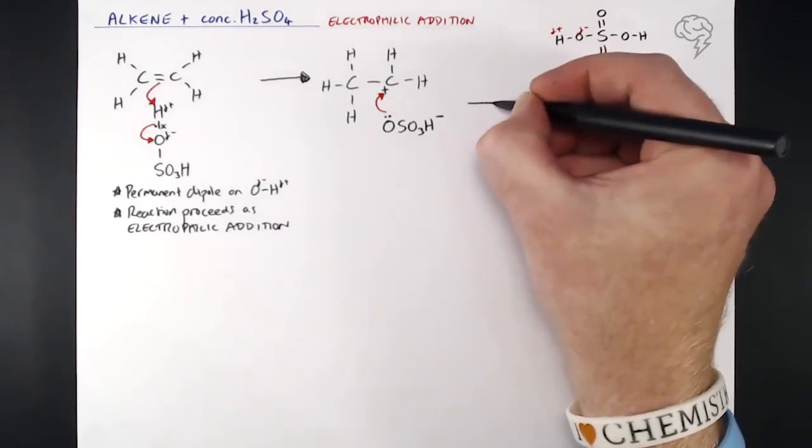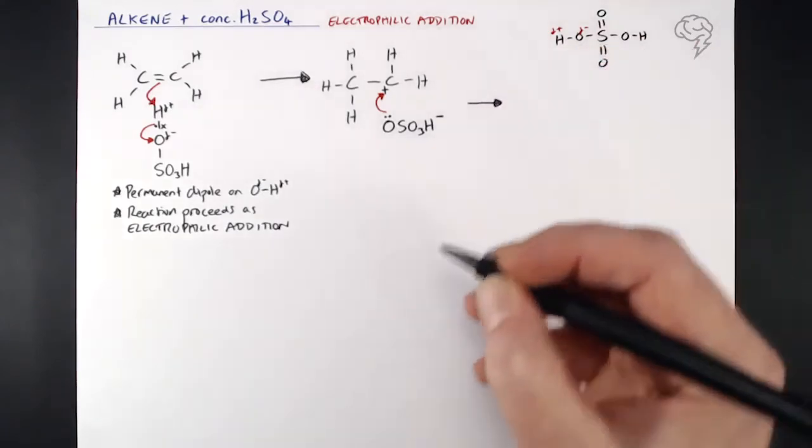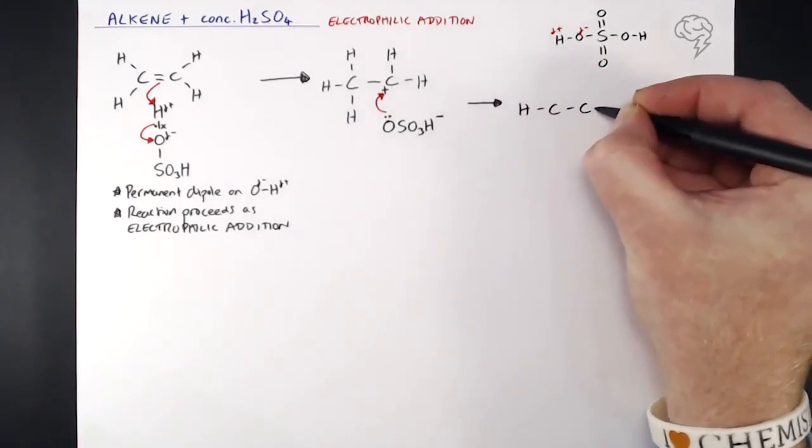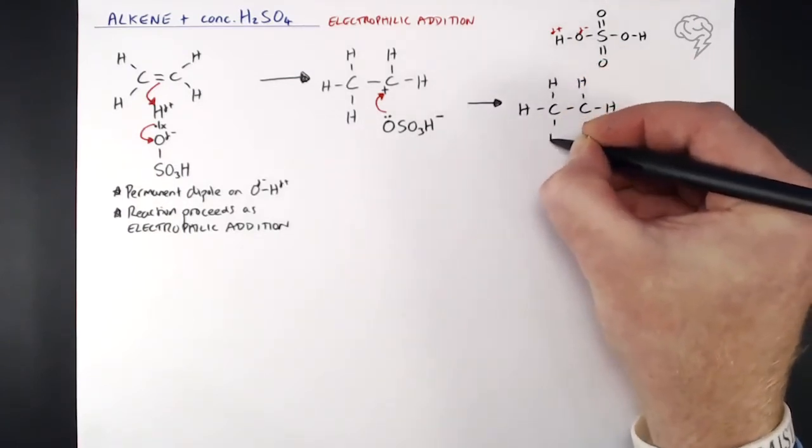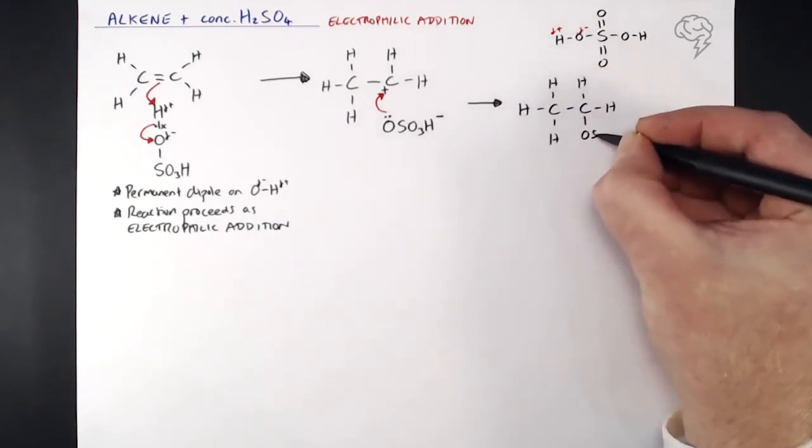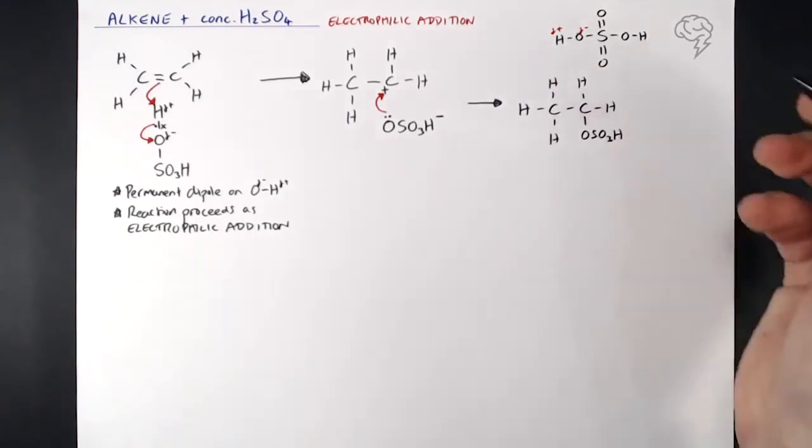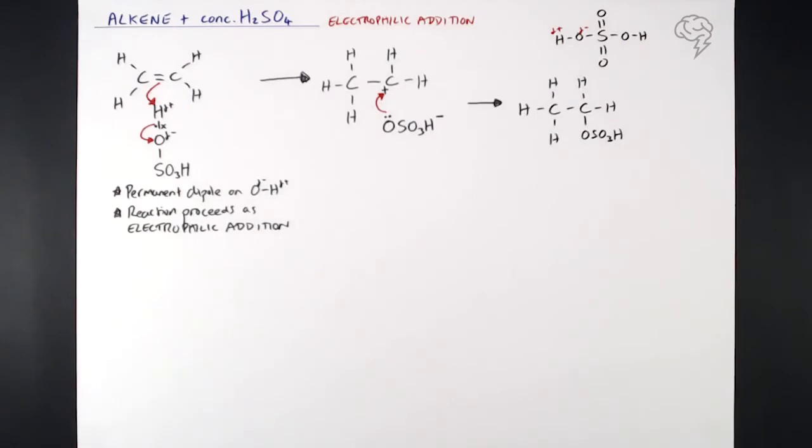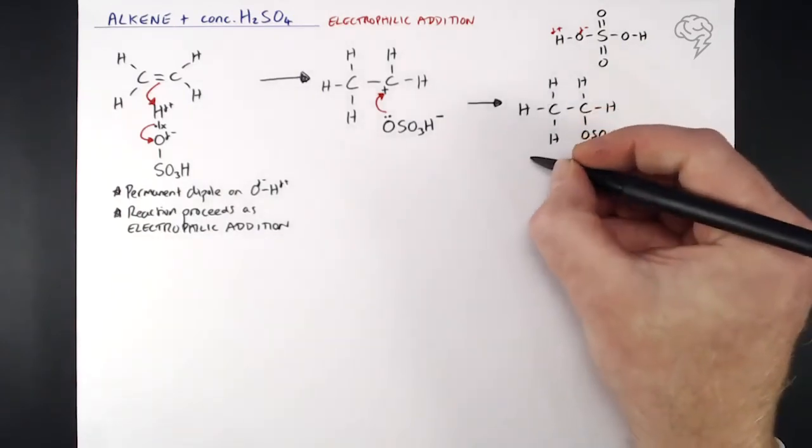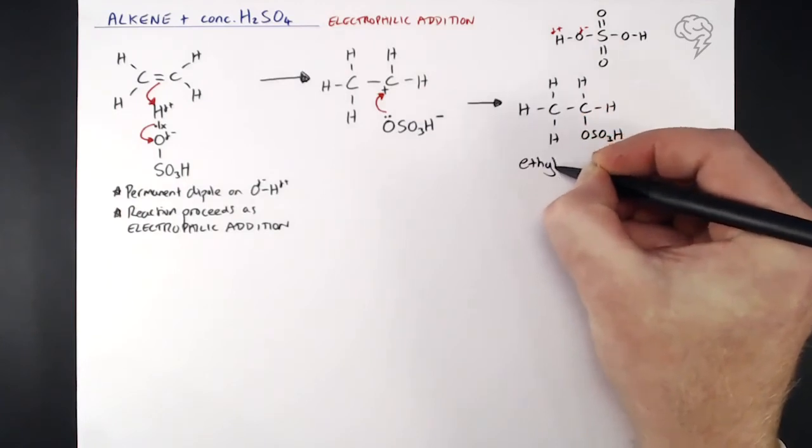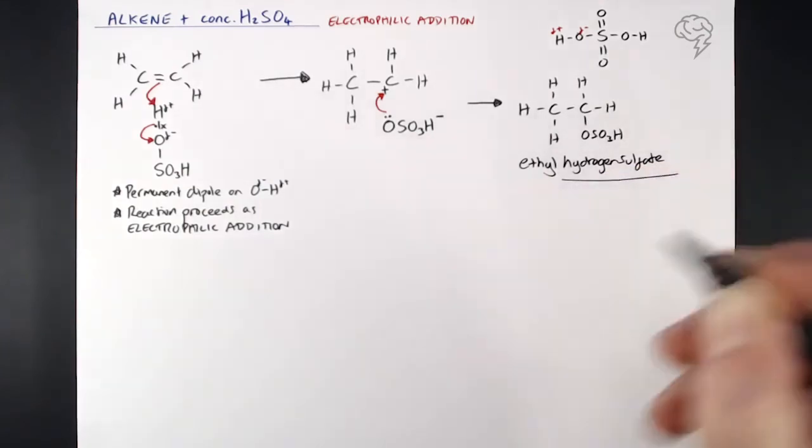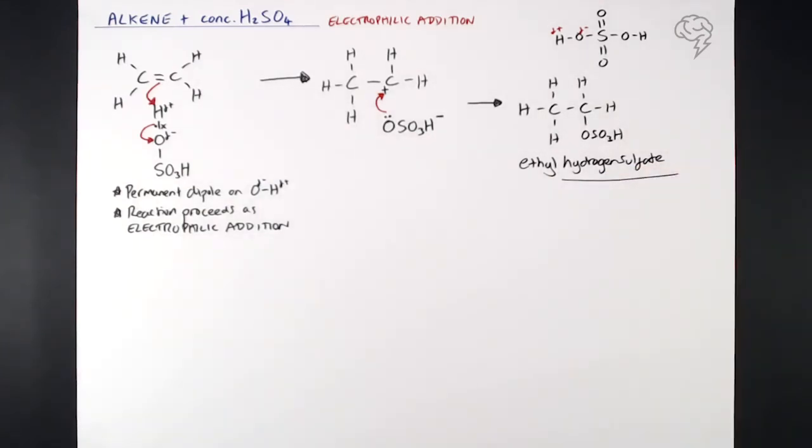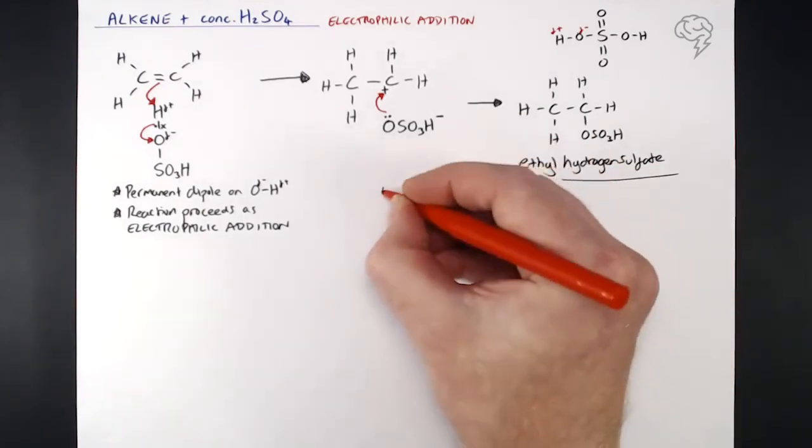Now moving on to our final product, I'm having to put this a little bit lower, but what we end up with is this molecule. So it's still of course two carbons long, we've got the hydrogen on the left that we've added and the OSO3H added to the second carbon in that intermediate process there. So what we've actually made here is ethyl hydrogen sulfate. That's the name of this molecule. Of course if you were looking at maybe propene in this reaction, you'd end up with propyl hydrogen sulfate and so on and so forth.